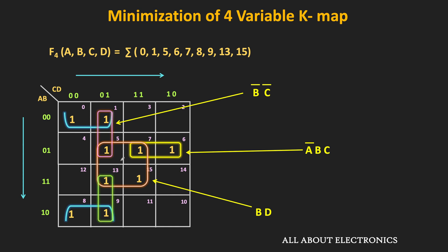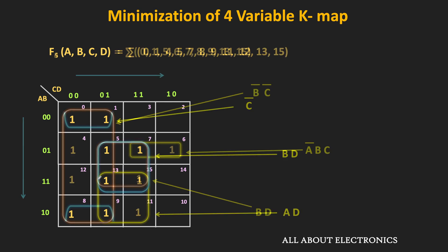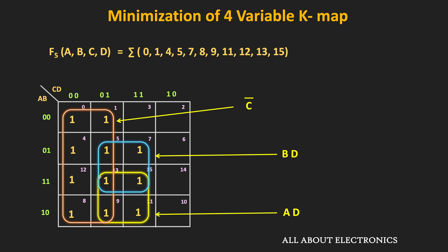Using these three essential prime implicants only, we are able to cover all the ones in the K-map. Similarly, in another example covered earlier, all the selected groups were the essential prime implicants. There are two more prime implicants of the given function, but all their ones are getting covered by the other prime implicants — therefore, these two groups are the non-essential prime implicants. Using these three essential prime implicants, we are able to cover all the minterms with no need to use any non-essential prime implicants in the minimal solution. In this example also, all the groups are essential prime implicants because in each group there is at least one minterm not covered by the other prime implicants.